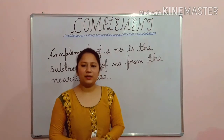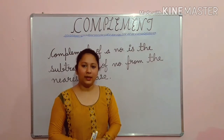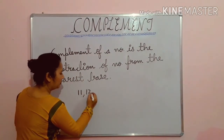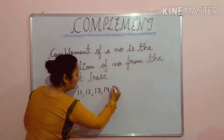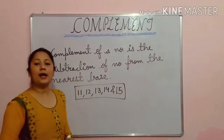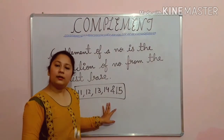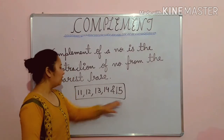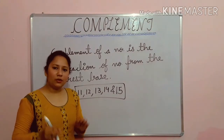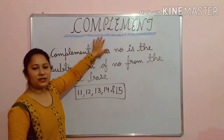Students, my previous topics were based on multiplication with specific numbers. I explained multiplication with 11, 12, 13, 14, and 15. These 5 numbers are specific numbers and they have different multiplication tricks. We have done the multiplication of these 5 numbers and that topic is completed now. Today we will start a new topic which is Complement.